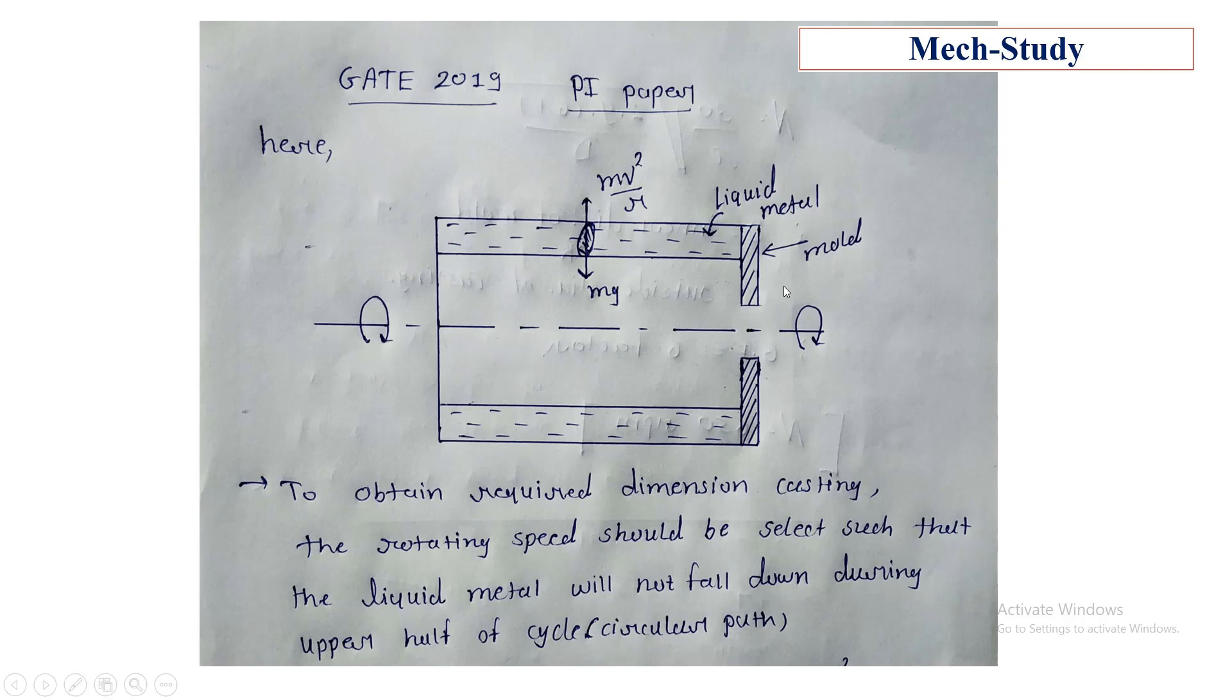This is a casting mold and this is liquid metal which experiences centrifugal force. To obtain required dimension casting, the rotating speed should be selected such that the liquid metal will not fall down during the upper half of the cycle, the upper half of the circular path.